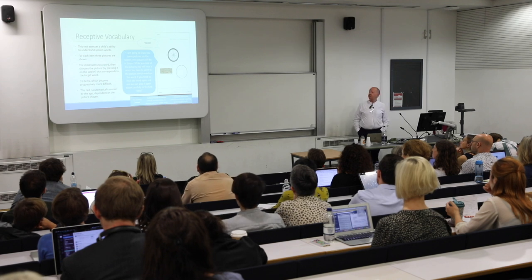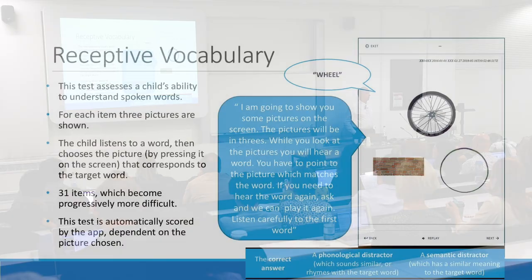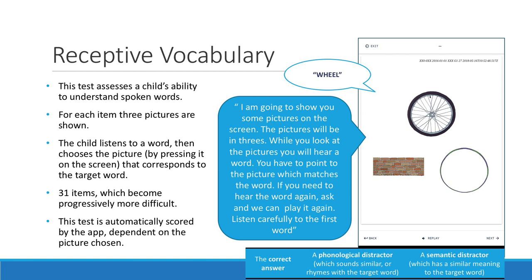The receptive vocabulary measure: the children see three pictures on the screen and hear a spoken word — in this case the app says 'wheel' — and the child simply has to tap on the screen the object which has been named.